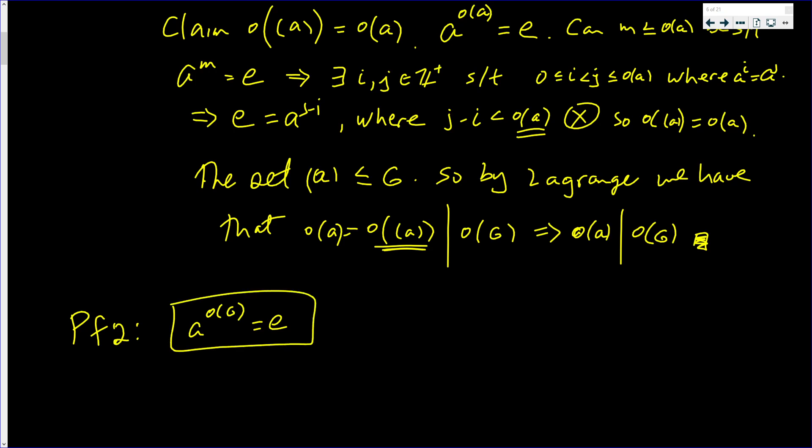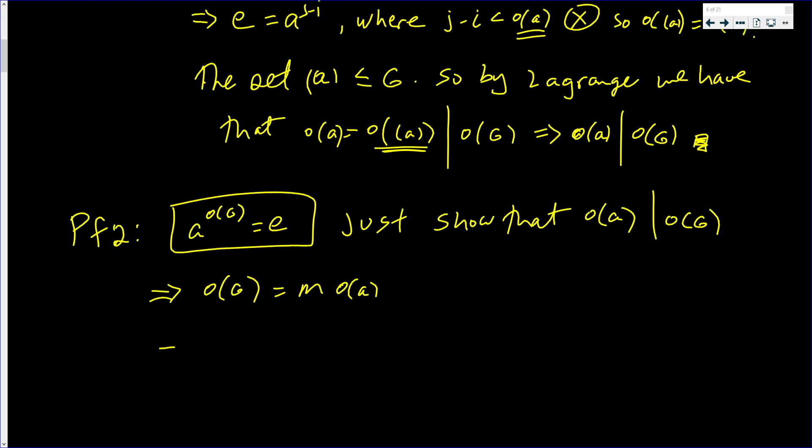We just shown that the order of A divides the order of G. But that means that the order of G is some multiple of the order of A. But that implies that A raised to the order of G, which is A raised to M times the order of A, which is the same as A raised to the order of A to the M. Well, that's E raised to the M, which is E.